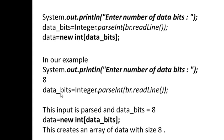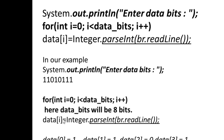Next, data is initialized as a new integer array of size 'data_bits', which is 8. The program then prompts the user to enter the data bits. A for loop runs for the length of data_bits, and each bit value is added into the data array. In our example, the input data bits are 1 1 0 1 0 1 1 1.